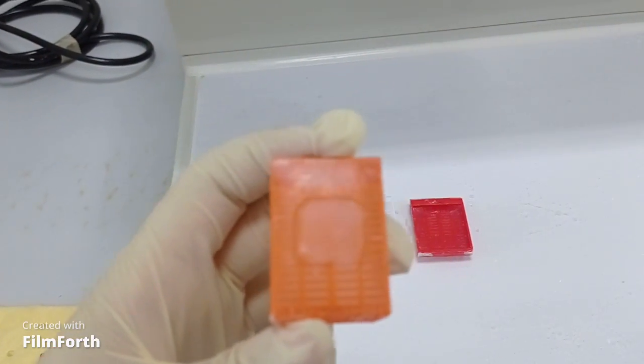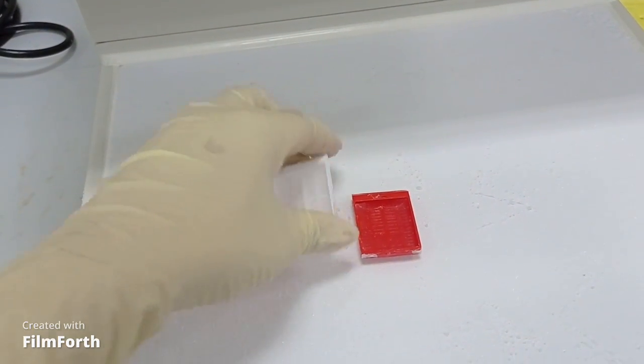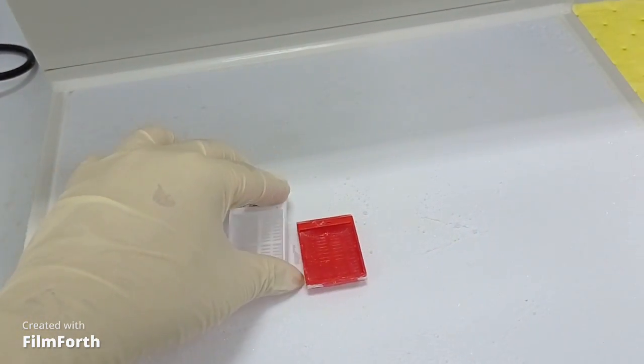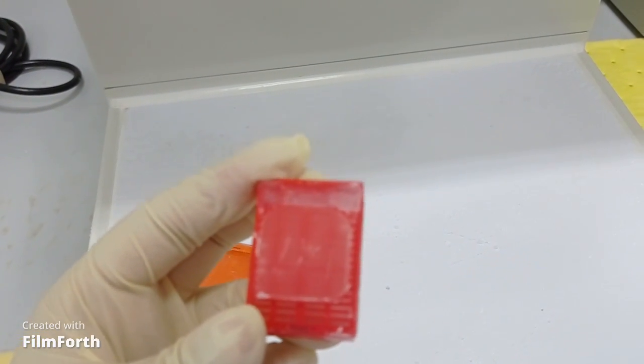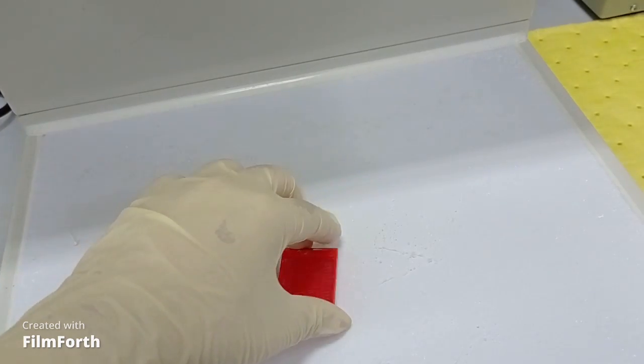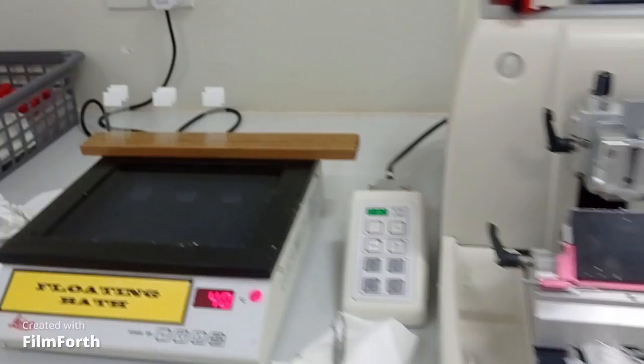As you can see in this section, I already put my breast cancer blocks on the cooling plate to cool them down. After that, I will proceed to the microtome machine for microsectioning and trimming. I will do the trimming first and after that I will do the microsectioning.